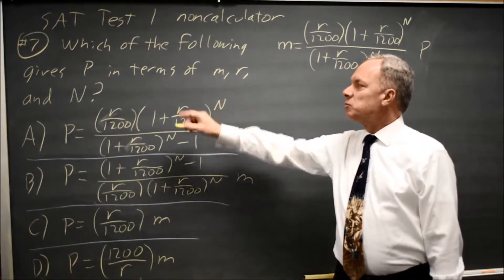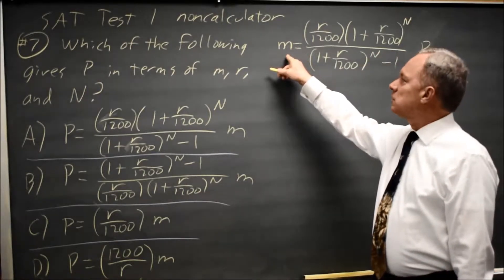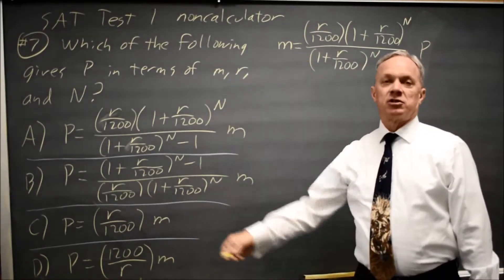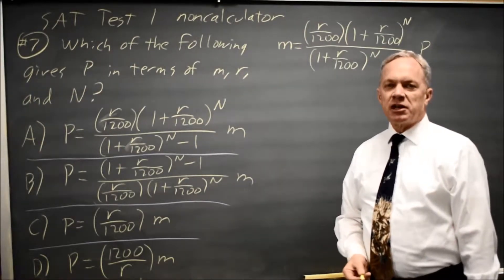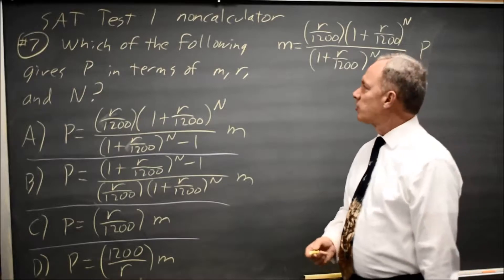The full question tells you more about what those are, but they give you a formula for M and all the answer choices are solved for P, so that clarifies what they're asking for if you stumble over the long words in the full question.